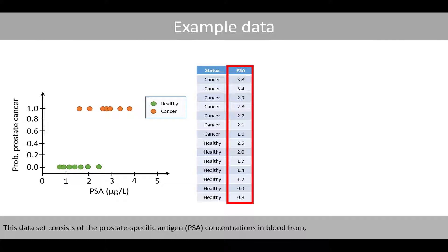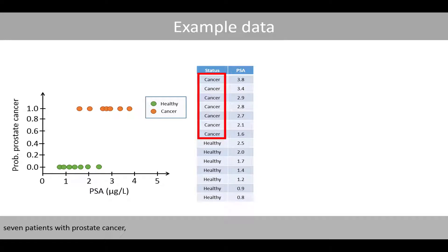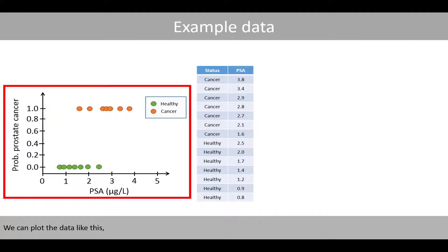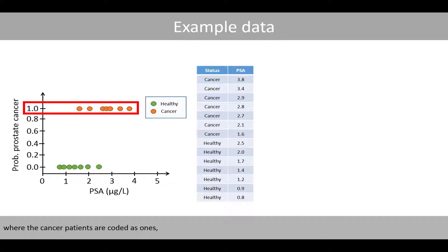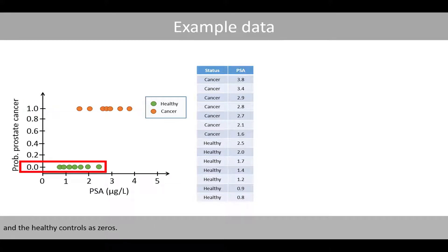This data set consists of prostate-specific antigen (PSA) concentrations in blood from 7 patients with prostate cancer and 7 healthy controls. We can plot the data like this, where the cancer patients are coded as 1s and the healthy controls as 0s.